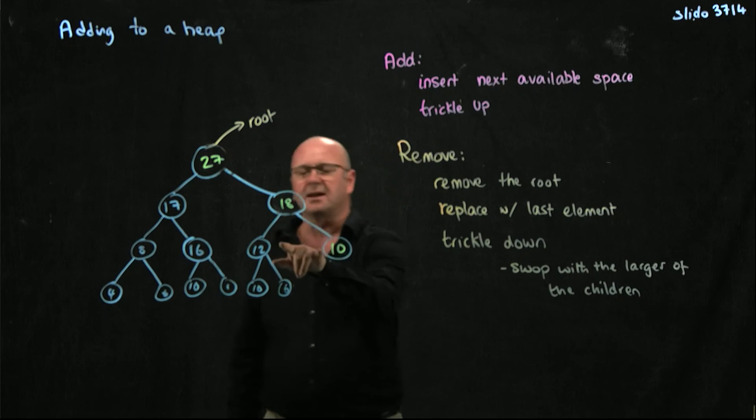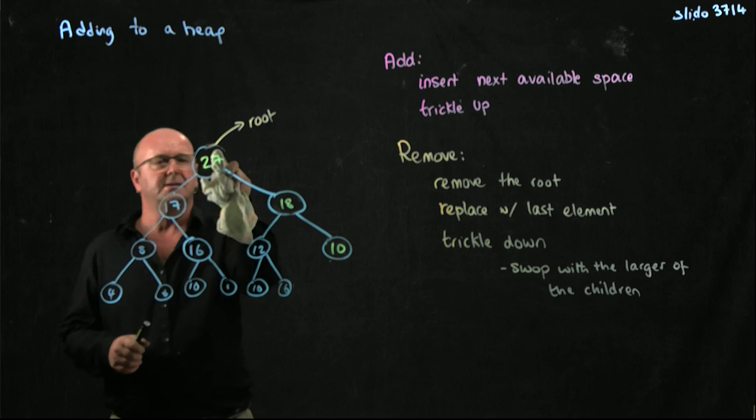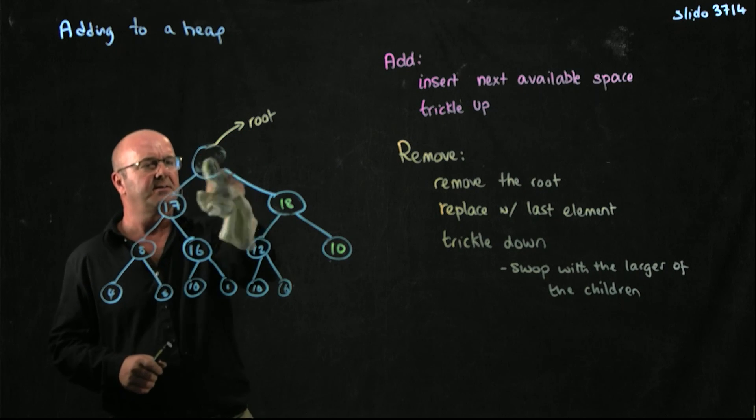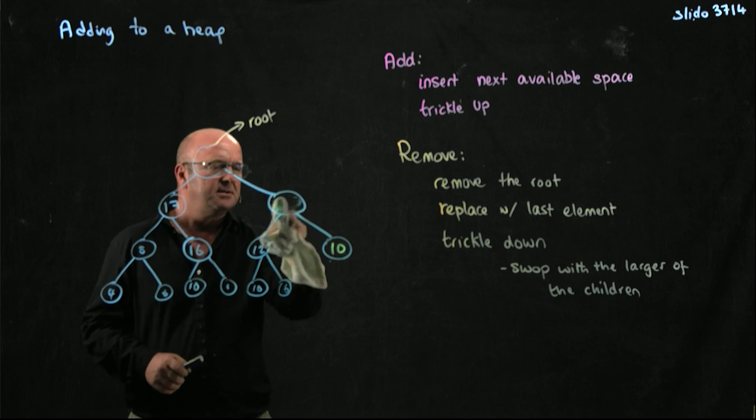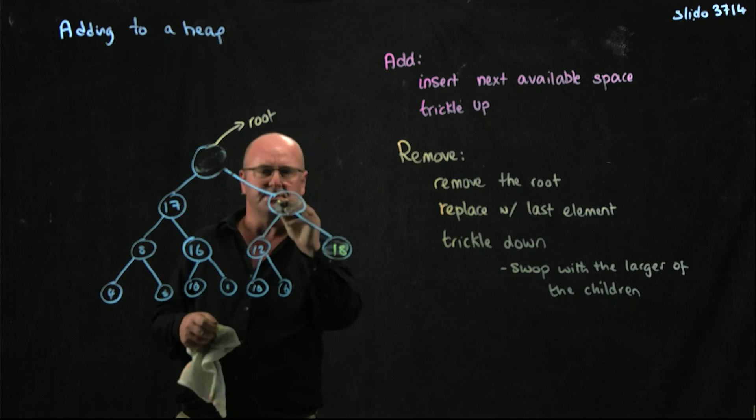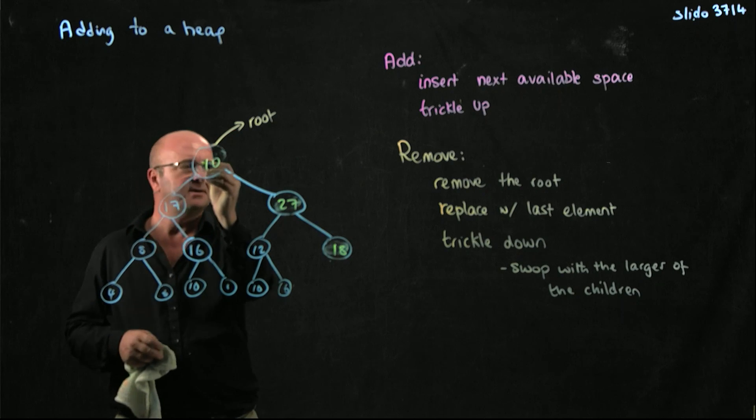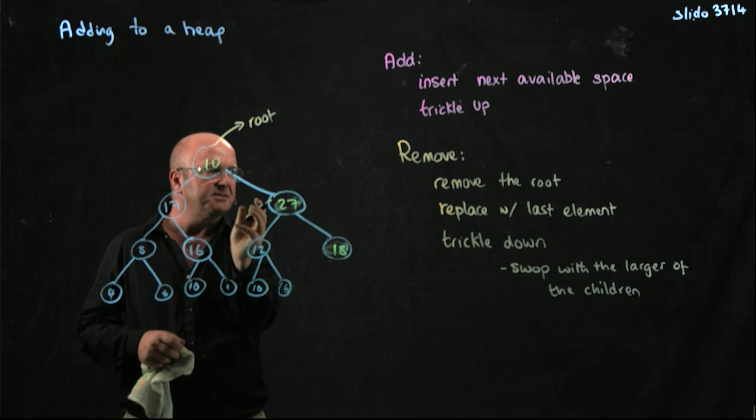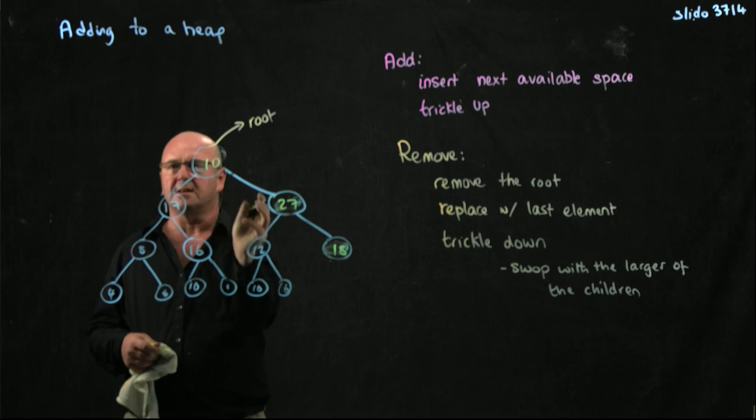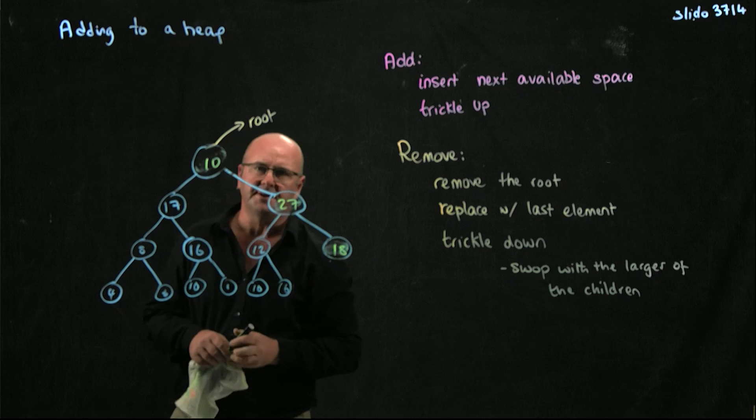And it's important that you choose the larger of the two children because if, for example, I originally had 18, 27, and 10, if I move the 17 up, then I'm going to have a heap violation, right? So if I take the larger of the two children, then I'm not going to have a heap violation.